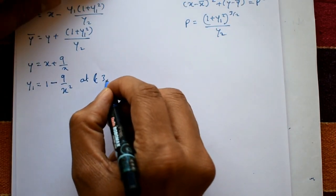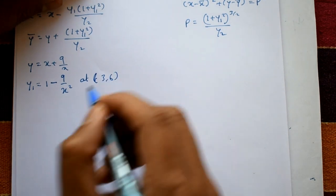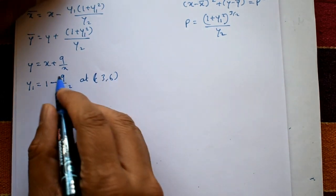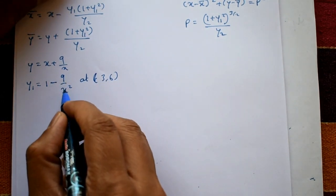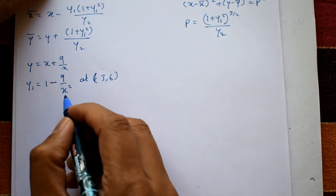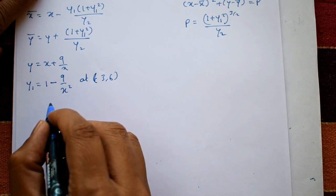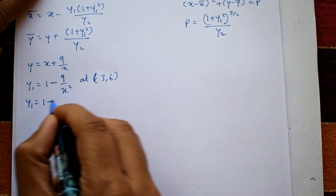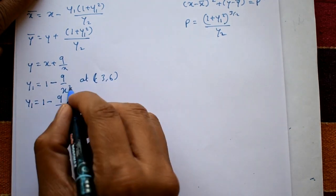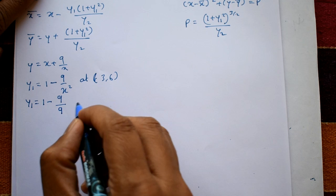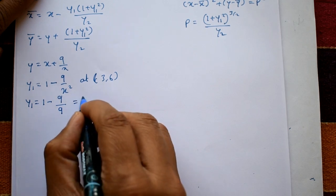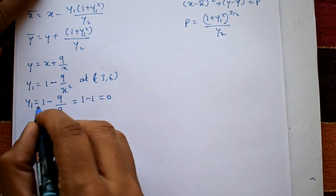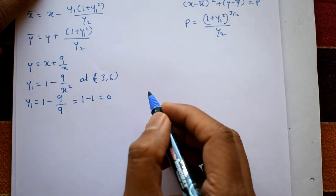The point given is (3, 6). Putting x = 3 into y1: y1 = 1 − 9/3² = 1 − 9/9 = 1 − 1 = 0. So y1 = 0.